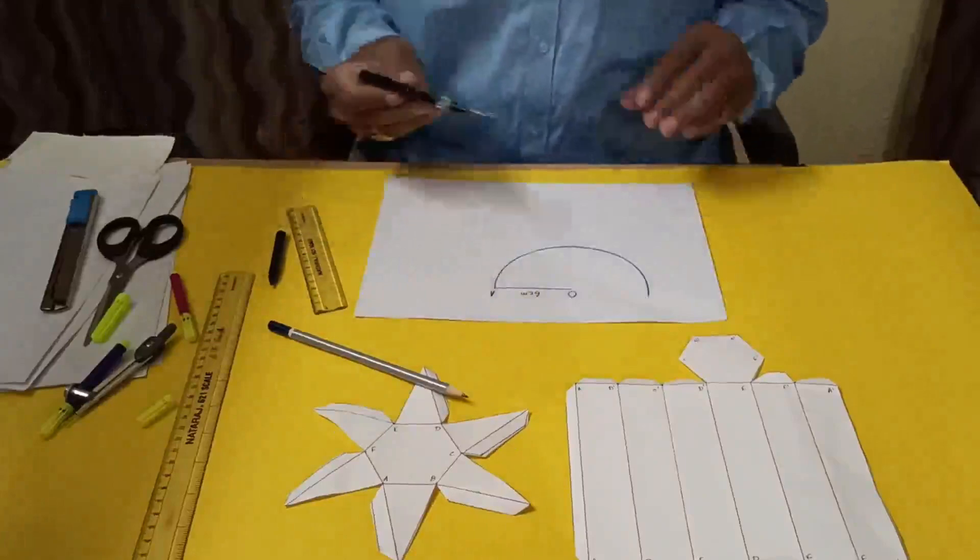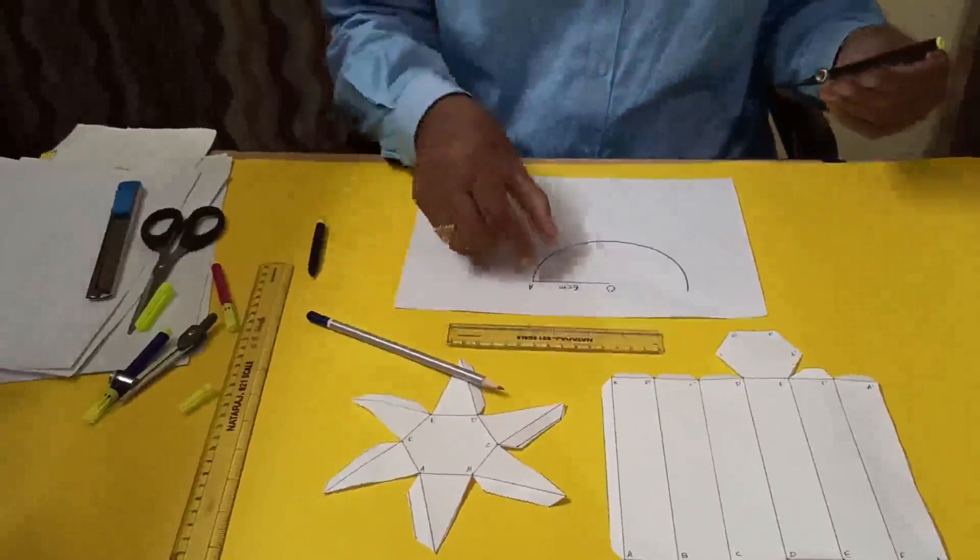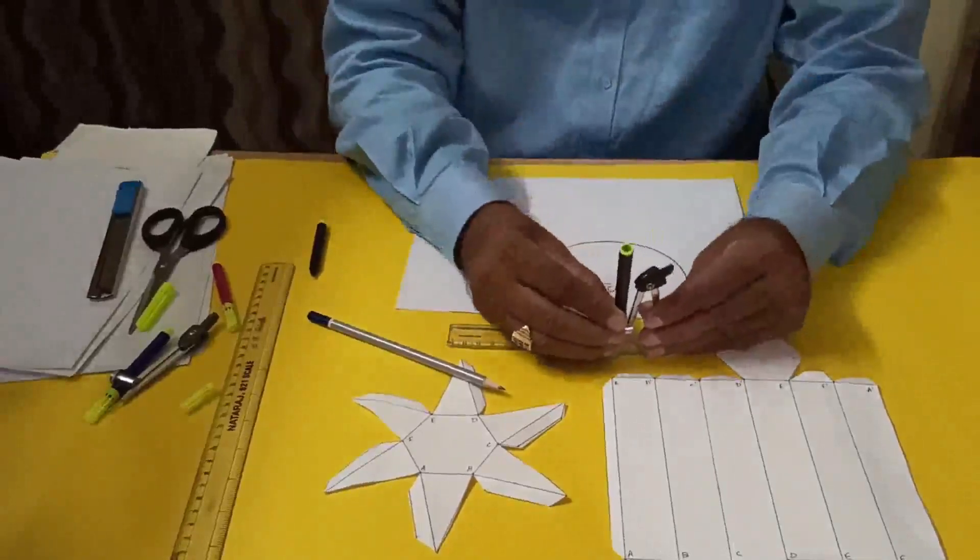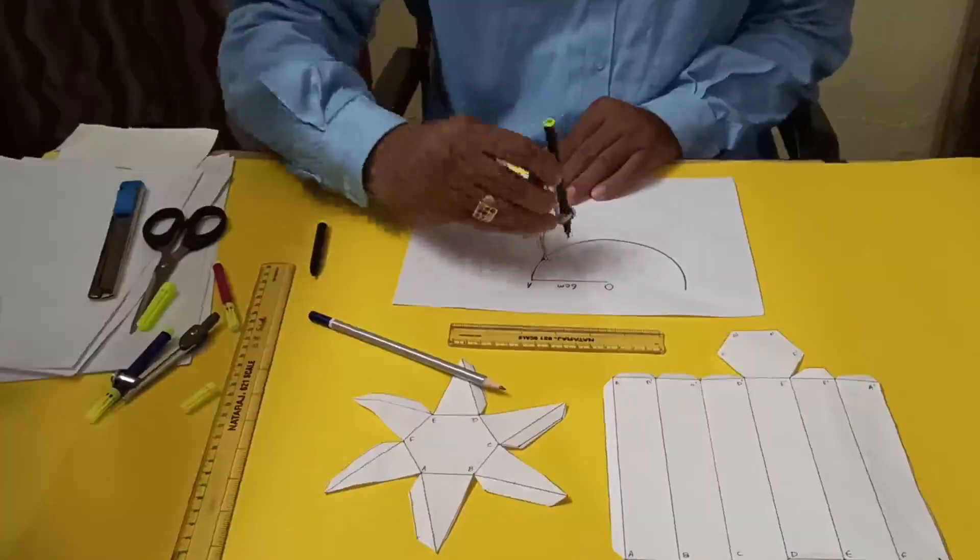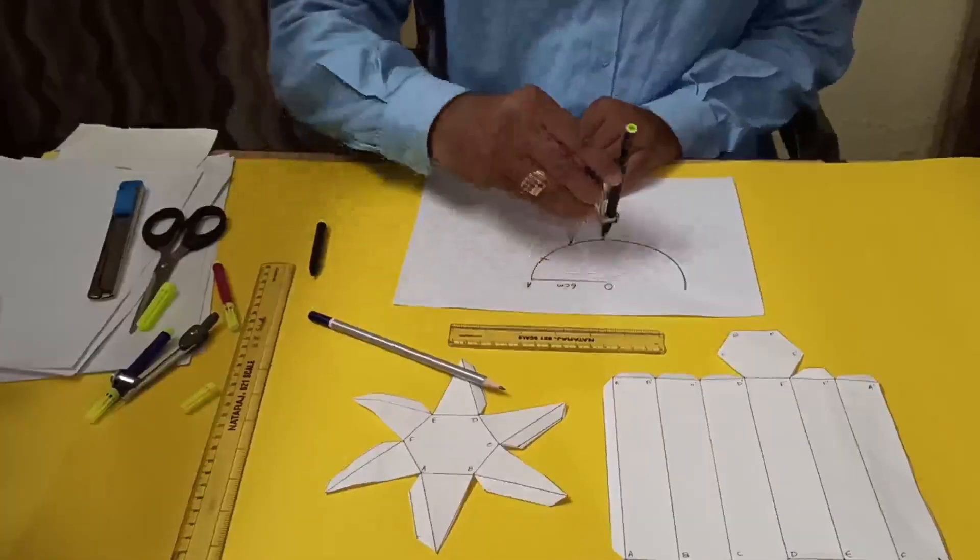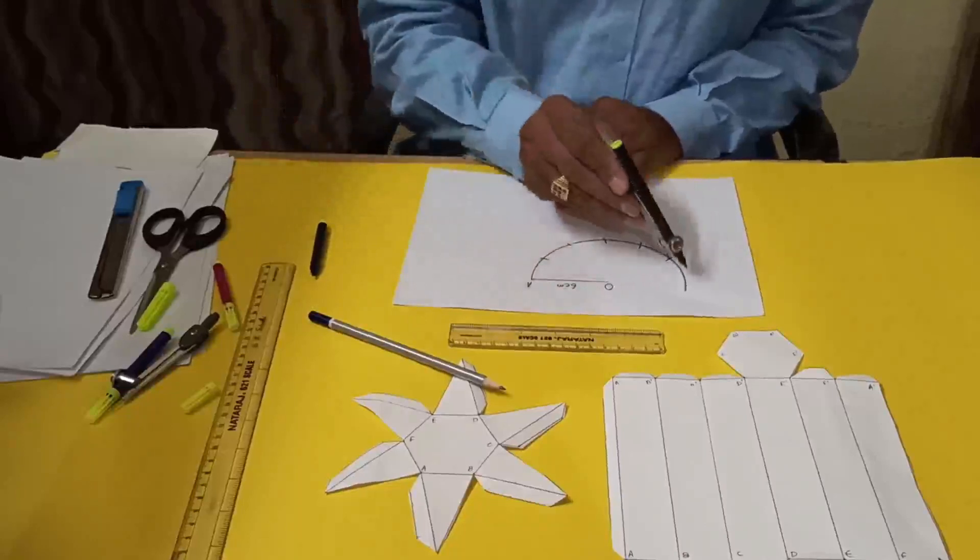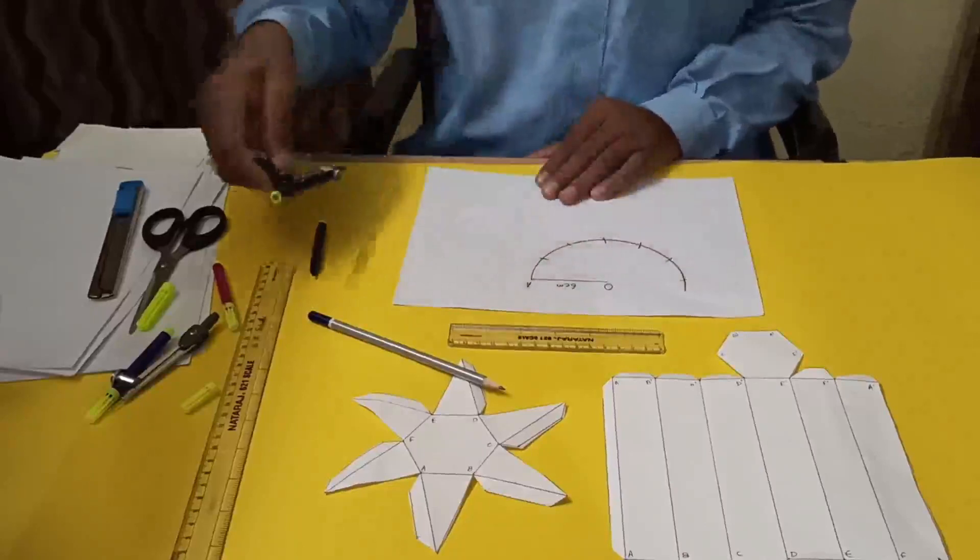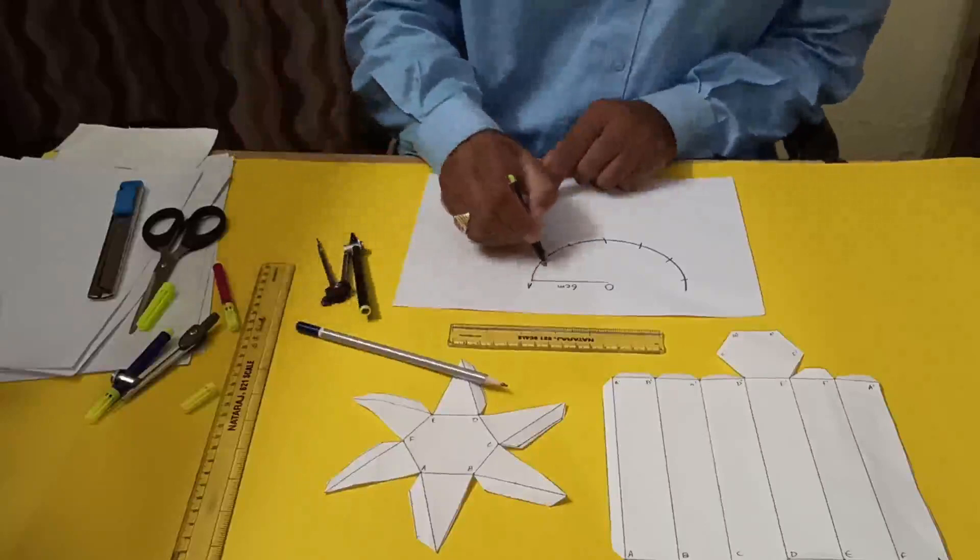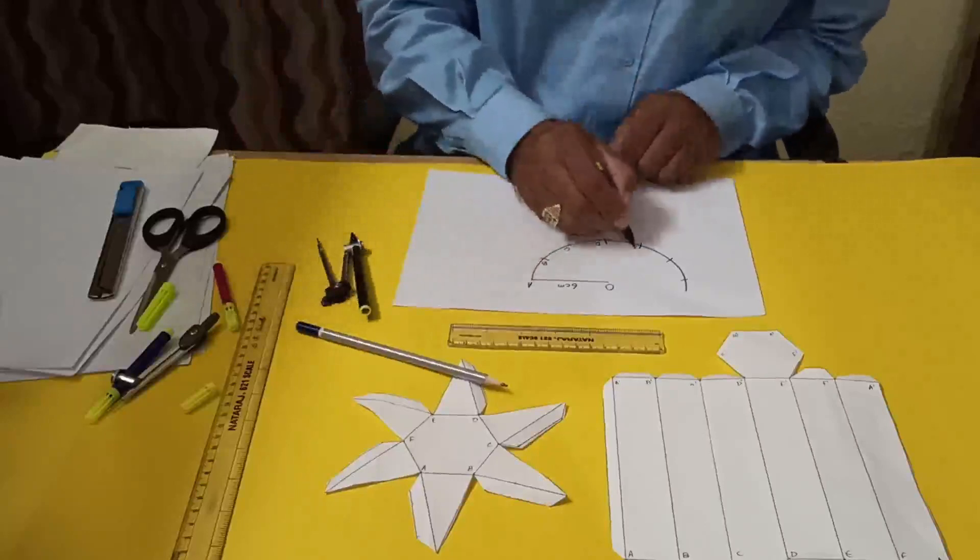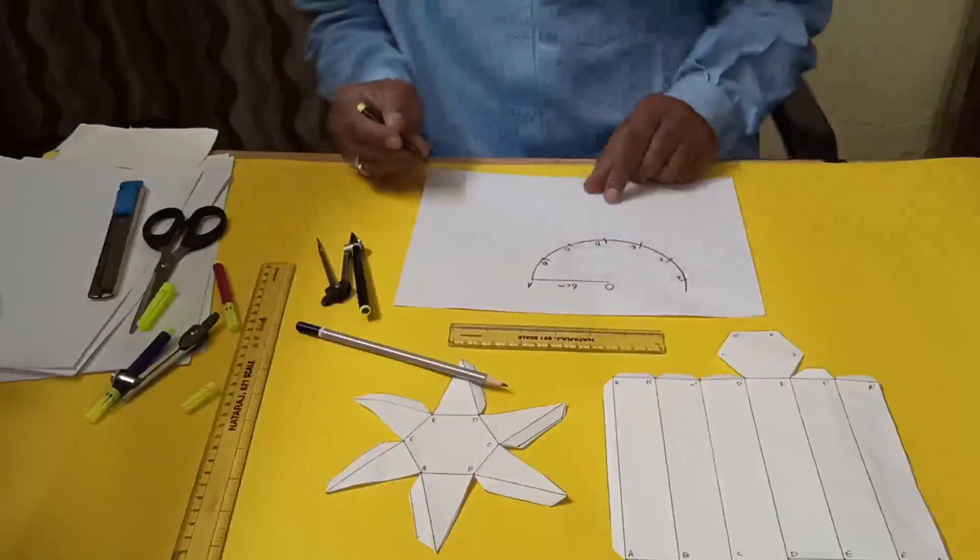After drawing this, we have to take the measurement that is 3 centimeters because the sides are 3 centimeters. So from point A: 1, 2, 3, 4, 5, and 6. As it is A, this point is B, this one C, D, E, F, and here is A.